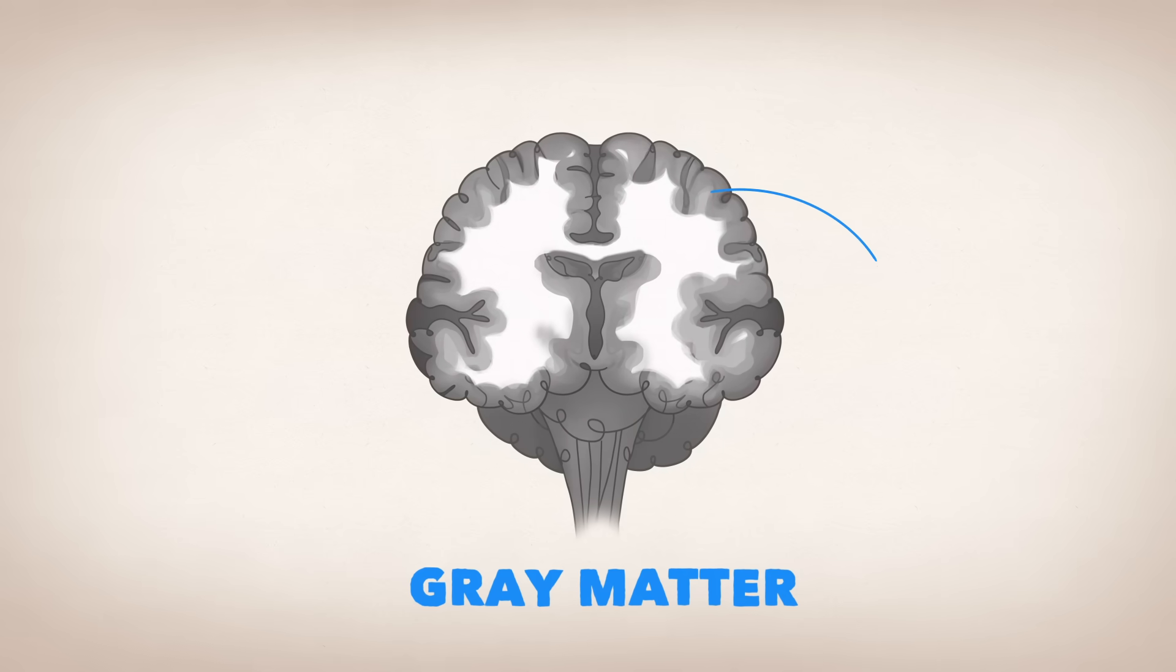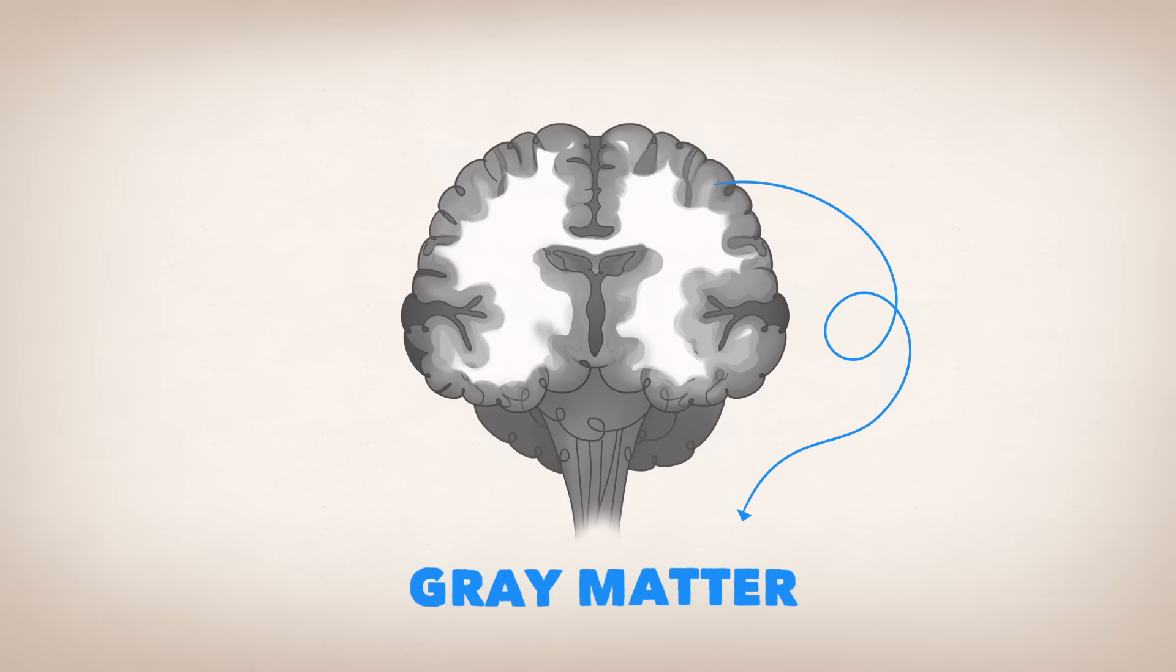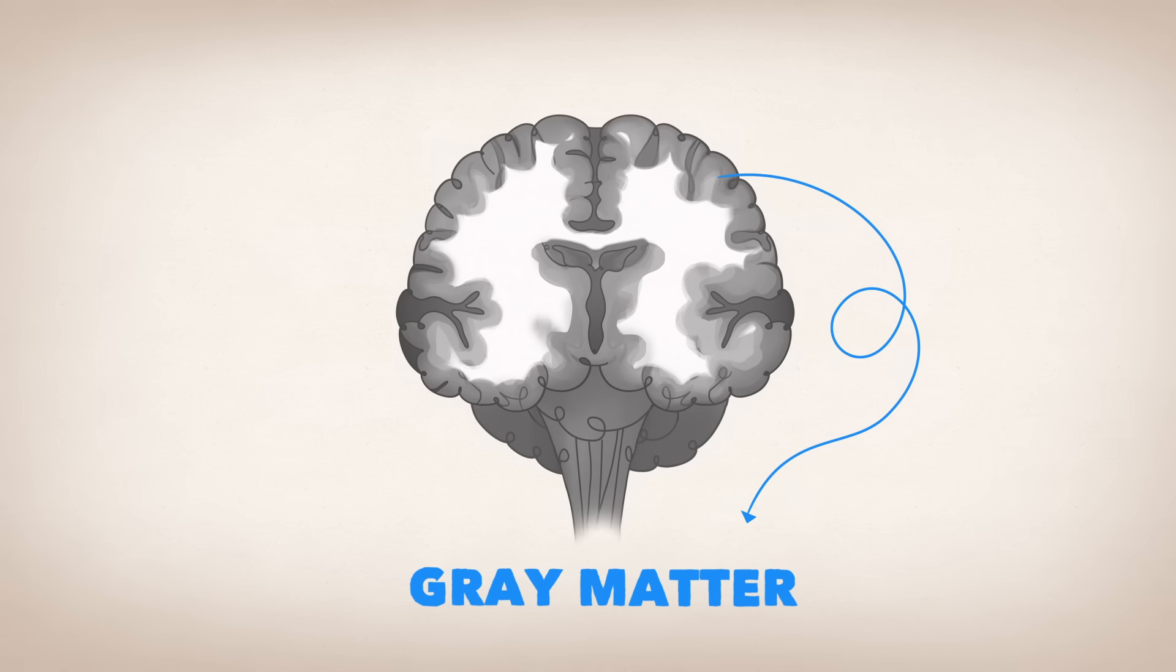Gray matter consists of cells and connections that facilitate communication at short ranges, creating dense information processing hubs.